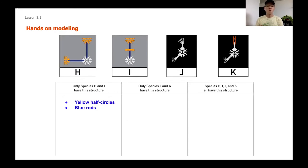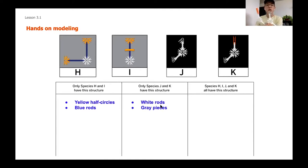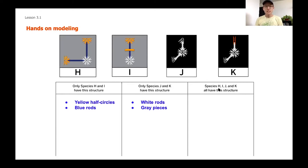Now let's look at J and K. The things they have in common that are completely unique — things H and I don't have — are white rods and gray pieces, which are a kind of corner angle shape. In that middle column of the T-chart, write in that J and K have white rods and gray pieces. If you have a better way to describe those shapes, go for it.